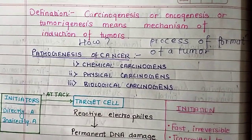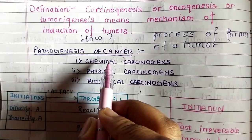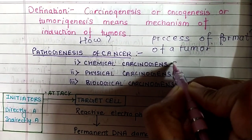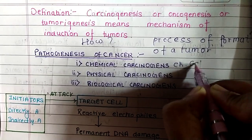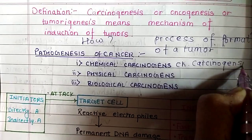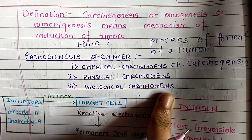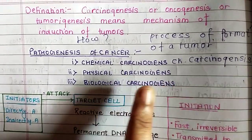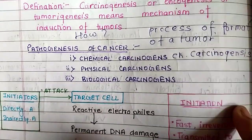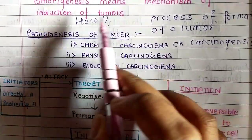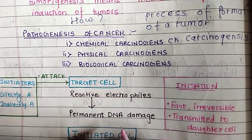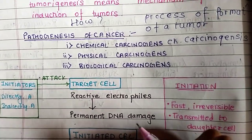Now we will see the pathogenesis of cancer. There are chemical carcinogens which cause chemical carcinogenesis, physical carcinogens which cause physical carcinogenesis, and biological carcinogens which cause biological carcinogenesis. This is how a tumor is formed — a carcinogen is something which causes a tumor.